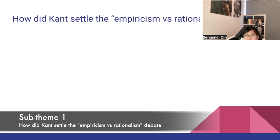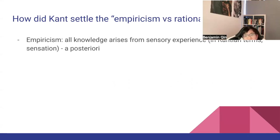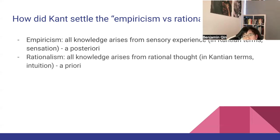How did Kant settle the empiricism vs rationalism debate? Empiricism is the view that all knowledge arises from sensory experience — Kant called this sensation, and also used the Latin phrase a posteriori, which means known after experience. Opposing empiricism is rationalism, the idea that all knowledge arises from rational thought. Kant calls this intuition and it's synonymous with a priori, which means known before experience.